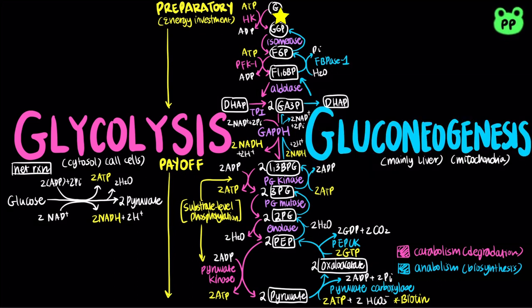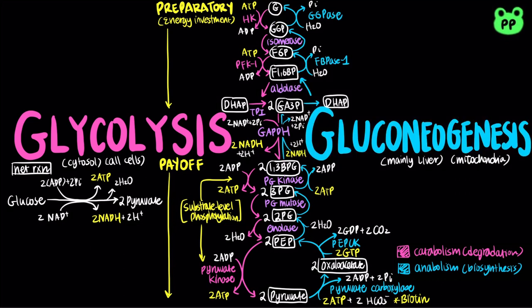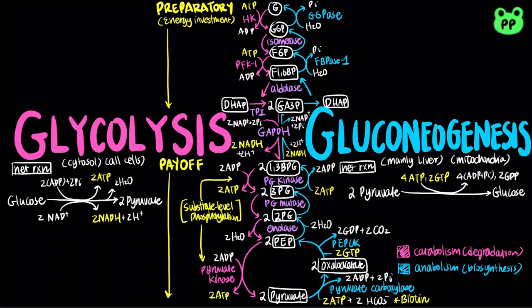The third bypass and final reaction of gluconeogenesis is the dephosphorylation of glucose-6-phosphate to glucose, which is another hydrolysis reaction catalyzed by glucose-6-phosphatase. The net reaction of gluconeogenesis converts 2 pyruvates to glucose by using 4 ATP, 2 GTP, 2 NADH, and 4 water molecules, which is a relatively expensive process.